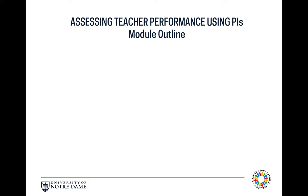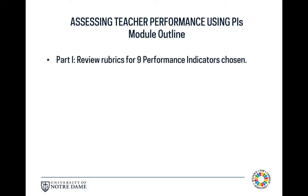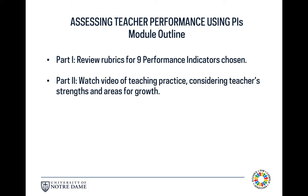In this exercise, we invite you to engage in five brief activities. First, we would ask that you review the rubrics for nine pre-selected performance indicators. After you've done this, we've prepared an approximately 14-minute video featuring a second-year middle school social studies teacher teaching part of a lesson on the topic of westward expansion. As you watch the video, consider the teacher's strengths and areas of growth as they relate to the nine performance indicators you previously reviewed.